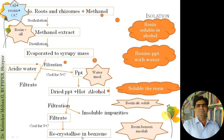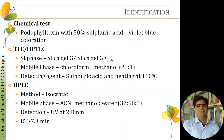To confirm what has been isolated is podophyllotoxin, identification tests are carried out — by qualitative chemical tests, TLC, HPTLC, or HPLC. In the chemical test, podophyllotoxin, being a lactone derivative, has a specific reaction with 50% sulfuric acid. When 50% sulfuric acid is mixed with a podophyllotoxin-containing fraction and warmed slightly, it produces a violet-blue coloration, confirming the isolated product is podophyllotoxin.